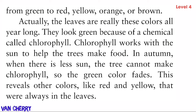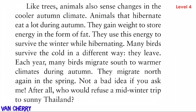Actually, the leaves are really these colors all year long. They look green because of a chemical called chlorophyll. Chlorophyll works with the sun to help the trees make food. In autumn, when there is less sun, the tree cannot make chlorophyll, so the green color fades, revealing other colors like red and yellow that were always in the leaves.